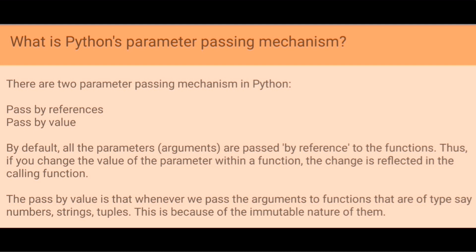The pass by value is that whenever we pass the arguments to functions that are of type say numbers, strings, and tuples. This is because of the immutable nature of them.